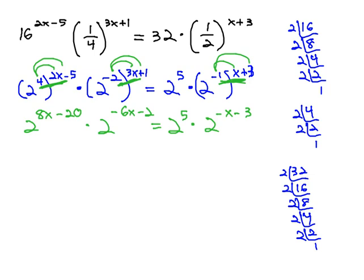And now we have all 2's, now we're finally allowed to combine into a single 2 on both sides by adding the exponents on each side. 8x minus 6x is 2x minus 22, and then we have negative x plus 2.